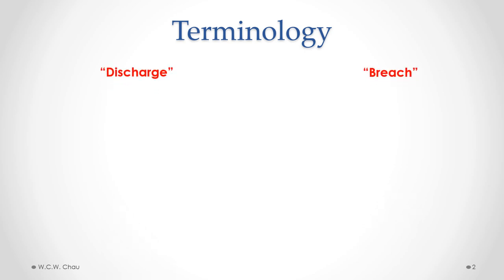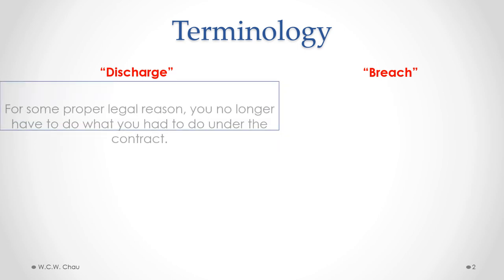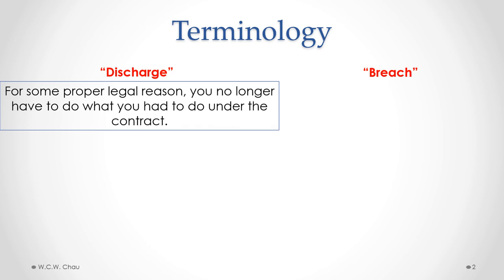Let's first try to understand some of the terminology that we'll be using in this module. We'll be talking about discharge and also breach. What we mean by discharge is that there is some proper legal reason that you no longer have to do what you have to do under the contract — in other words, you are relieved or discharged from your obligations under a contract due to some proper, legally recognized reason.